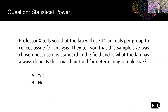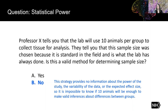Here's a question related to choosing sample sizes. Professor X tells you that the lab will use 10 animals per group to collect tissue for analysis, chosen because it is standard in the field and what the lab has always done. Is this a valid method for determining sample size? The answer is no, because this strategy provides no information about the power of the study, the variability of the data, or the expected effect size. It's impossible to know if 10 animals will be enough to make valid inferences about differences between the groups.